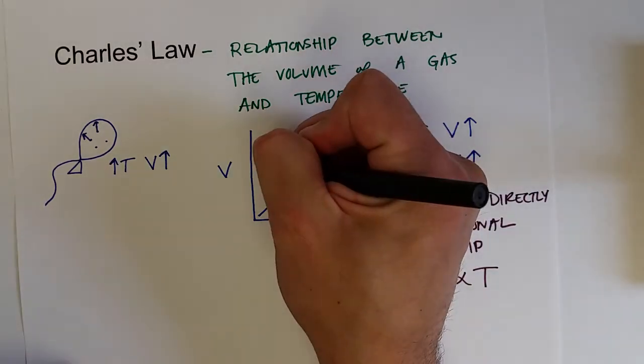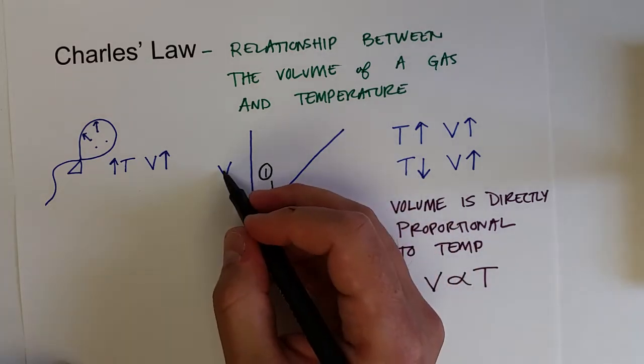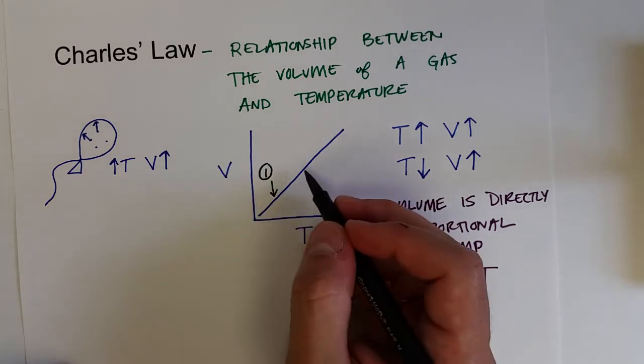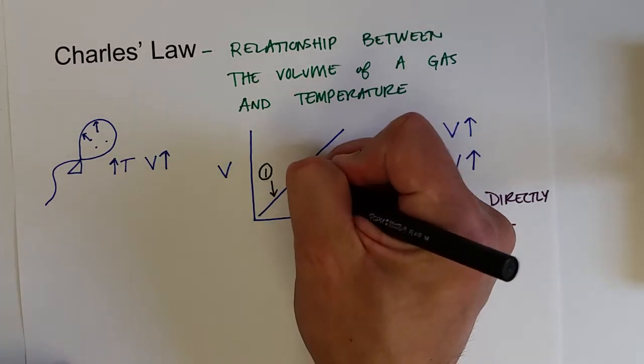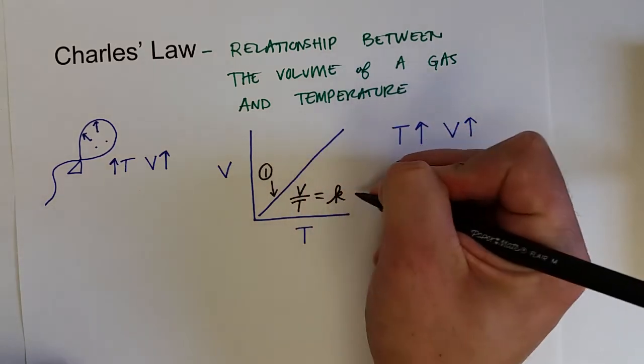If we were to do this experiment a couple of times, we would see that the volume over the temperature would give us the slope of this line, or the function. So volume over temperature gives us a constant, which we call K.